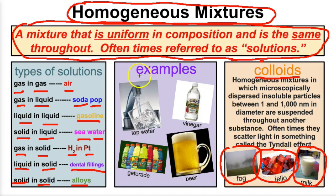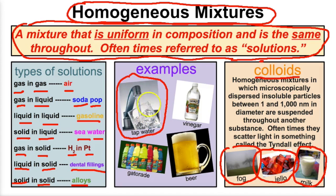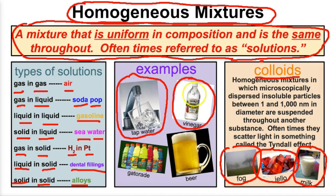Some more examples of homogeneous mixtures: tap water — the water we drink from the faucet is not a pure substance, it's actually a mixture. It's got water, fluoride, maybe a little chloride, and other agents that help keep the water clean. Vinegar is also a homogeneous mixture — it's the same throughout. And Gatorade is a mixture of water...